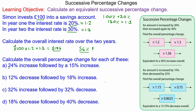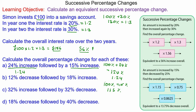Moving on to the next question: a 24 percent increase followed by a 15 percent increase. A 24 percent increase is 100 percent added to 24 percent, which is 124 percent — divide by 100 gives 1.24. A 15 percent increase is 100 percent added to 15 percent, which is 115 percent. 115 divided by 100 is 1.15.